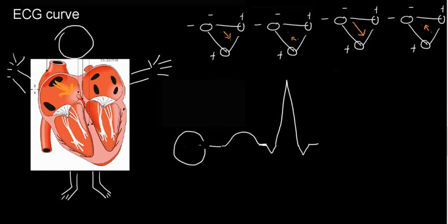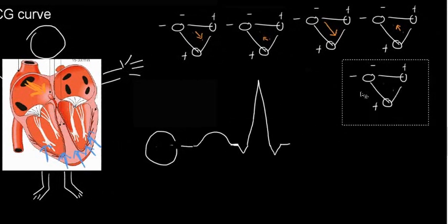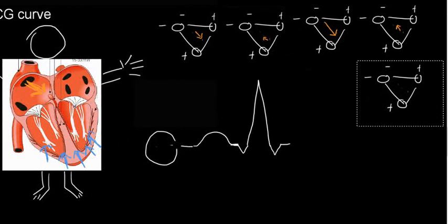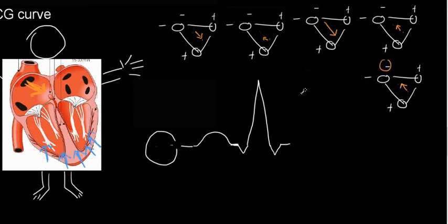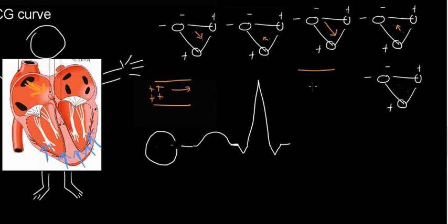What happens next? We're going to have the repolarizing wave going this way. You might say the direction of the repolarizing vector gives a negative deflection — but wait. Let's imagine we have a tissue with positive charges moving from left to right — that gives positive deflection. But the wave of repolarization is not positive charges moving — it's negative charges moving from one side to the other.